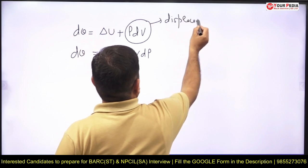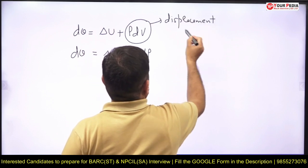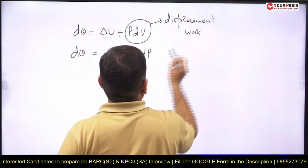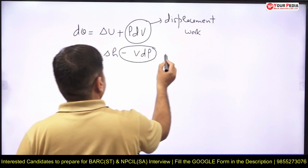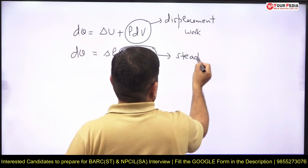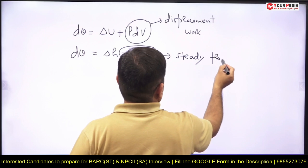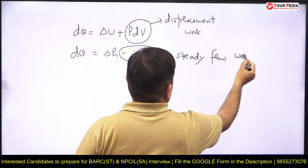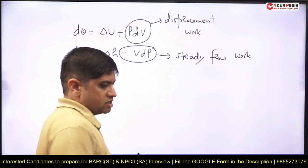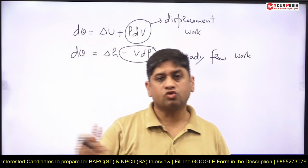Piston cylinder mechanism is required for displacement work or closed system work, whereas minus VdP is called steady flow work. So the question was: for which of the reversible processes are these two works the same?